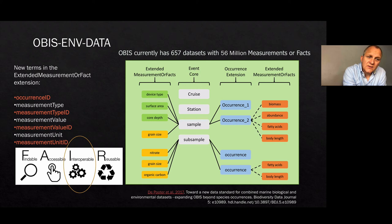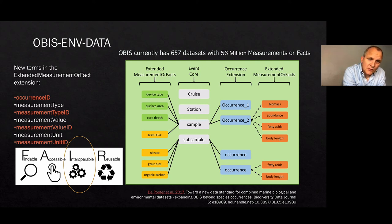We added a number of terms to make this possible — that's why it's called the Extended Measurement or Facts extension. We added the occurrenceID to be able to link measurements or facts to both the occurrence extension and the event core. We also added a number of IDs which link to controlled vocabularies: measurementTypeID, measurementValueID, and measurementUnitID. Because types, values, and units are free text fields, it was necessary to ensure datasets are interoperable by linking them to definitions in controlled vocabularies.